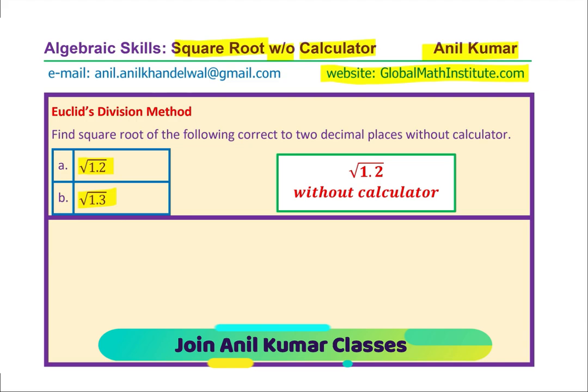So, in this video, we'll also understand a very special division, which is also known as Euclid's division method, which is going to help us find the square root for any given number. The question specifically says, find square root of the following correct to two decimal places without calculator. We are taking up √1.2 without calculator and also √1.3 without calculator.